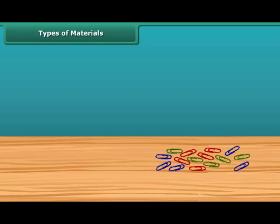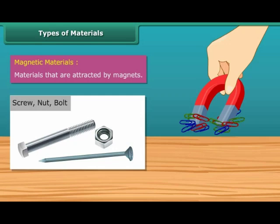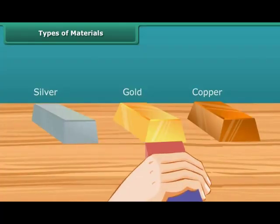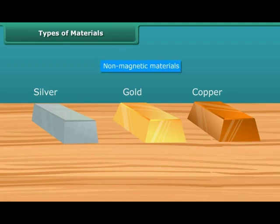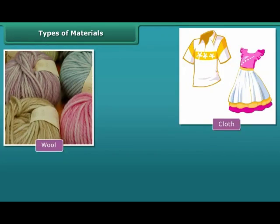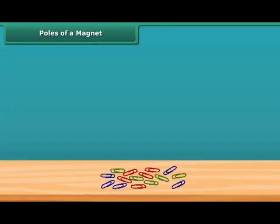Now let us look at the types of materials. Materials that are attracted by magnets are called magnetic materials. For example, screws, nuts, and bolts are magnetic materials. Materials that are not attracted by magnets are called non-magnetic materials. For example, wool, cloth, and bricks are non-magnetic materials.